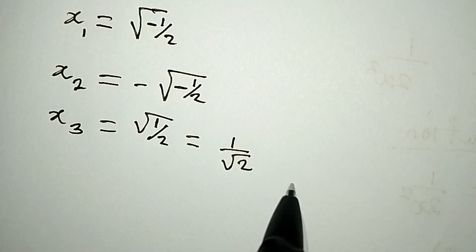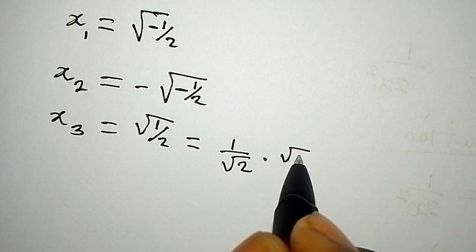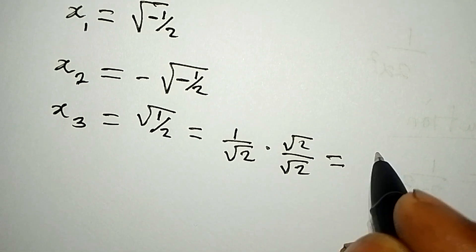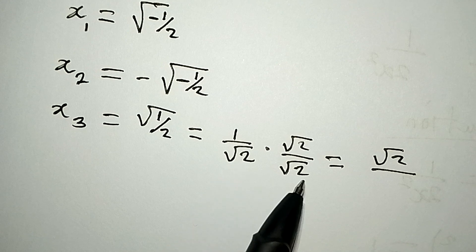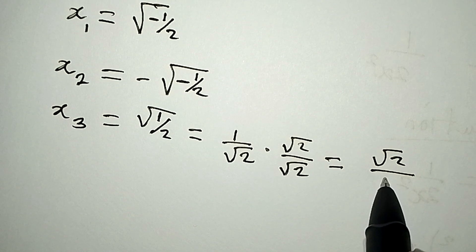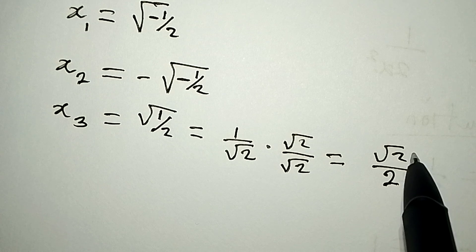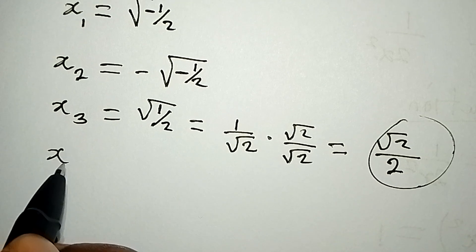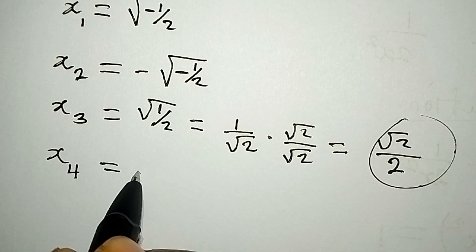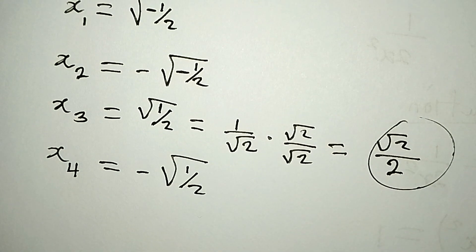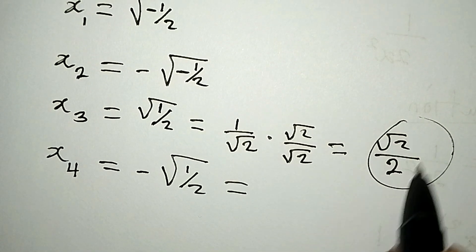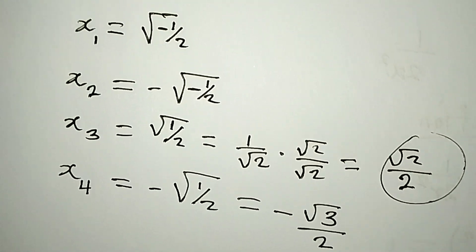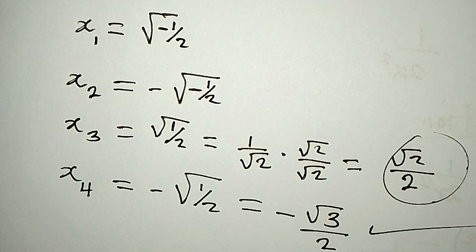We can rationalize x3 by multiplying both numerator and denominator by root 2, giving us root 2 over 2. Then x4 equals negative square root of 1 over 2, which gives negative root 2 over 2. Those are the four values of x. Thank you for watching.